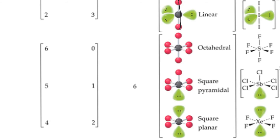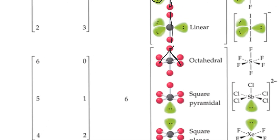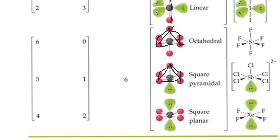The last case is six electron domains, which gives an octahedral geometry — essentially two square-based Egyptian pyramids touching at their bases, one inverted on top of the other. With all six as bonds, all positions are equivalent. With one non-bonding pair, you get a square pyramidal shape — like a single Egyptian pyramid. With two non-bonding pairs, they stay on opposite sides (top and bottom) to avoid each other, and what remains is square planar — all remaining atoms on one plane in a square arrangement.